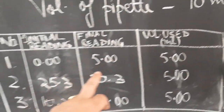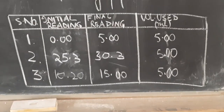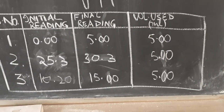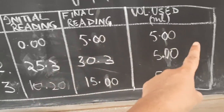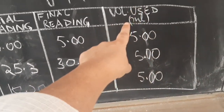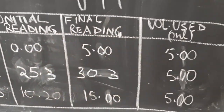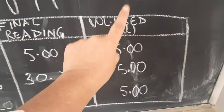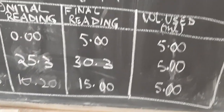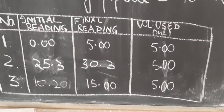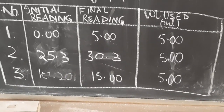The initial reading can be anything — if liquid in the burette is less you can add more after a particular reading. The important thing is to note the initial reading and the final reading, take the difference, and that gives you the volume used. ml is to be written only with the volume used — not with the initial reading, not with the final reading. Initial and final are simply marks; only the liquid drawn out is volume in ml.